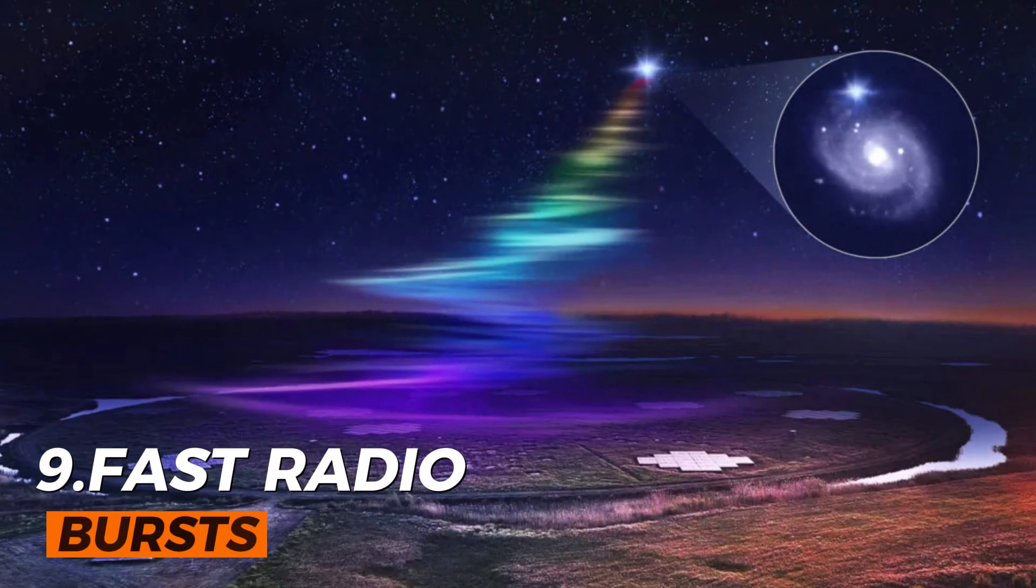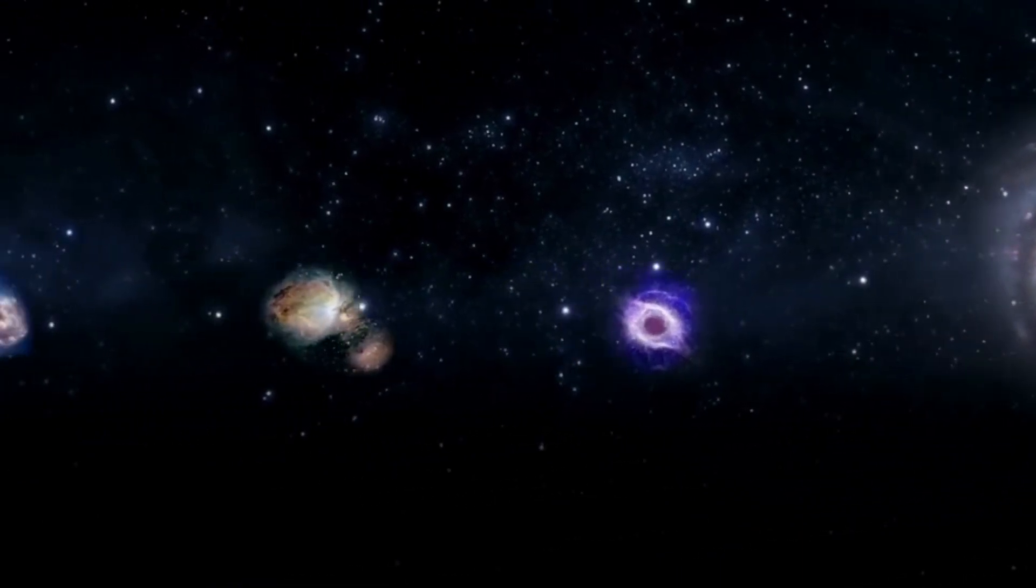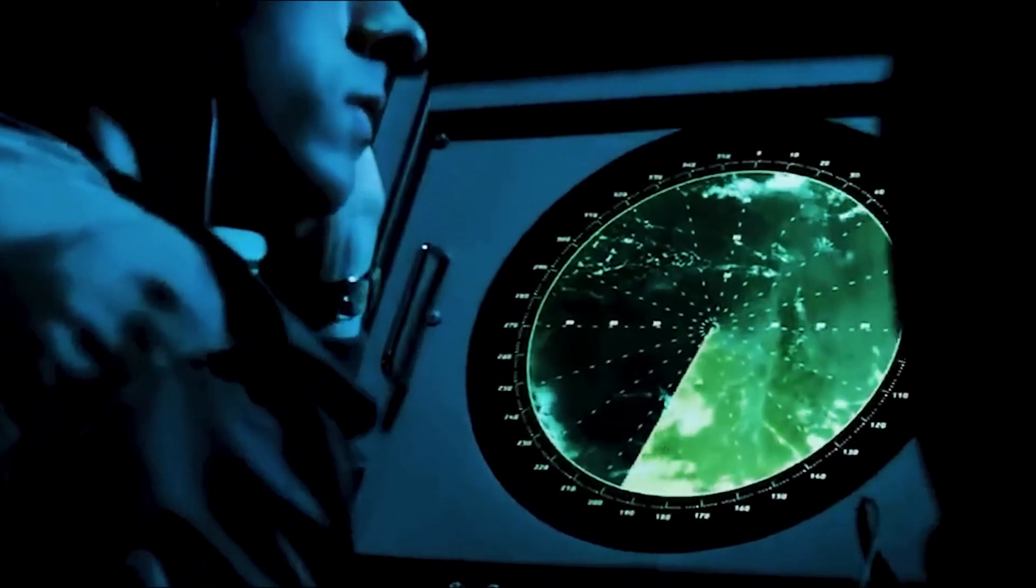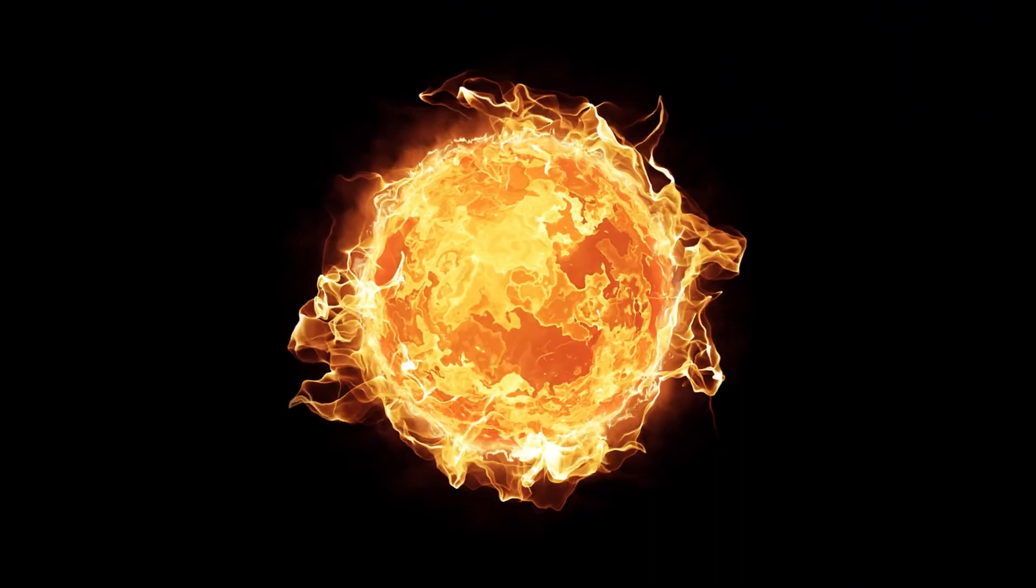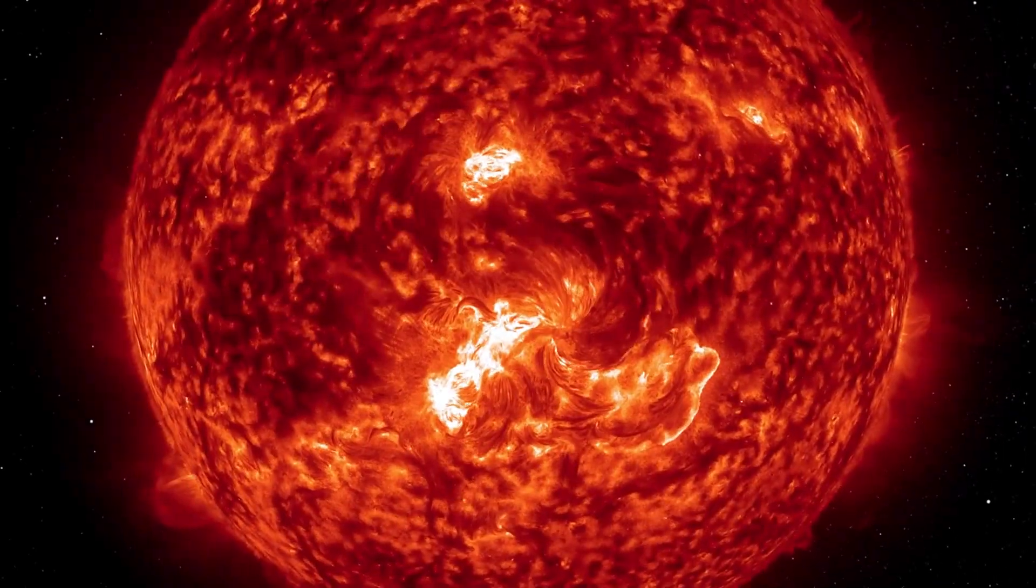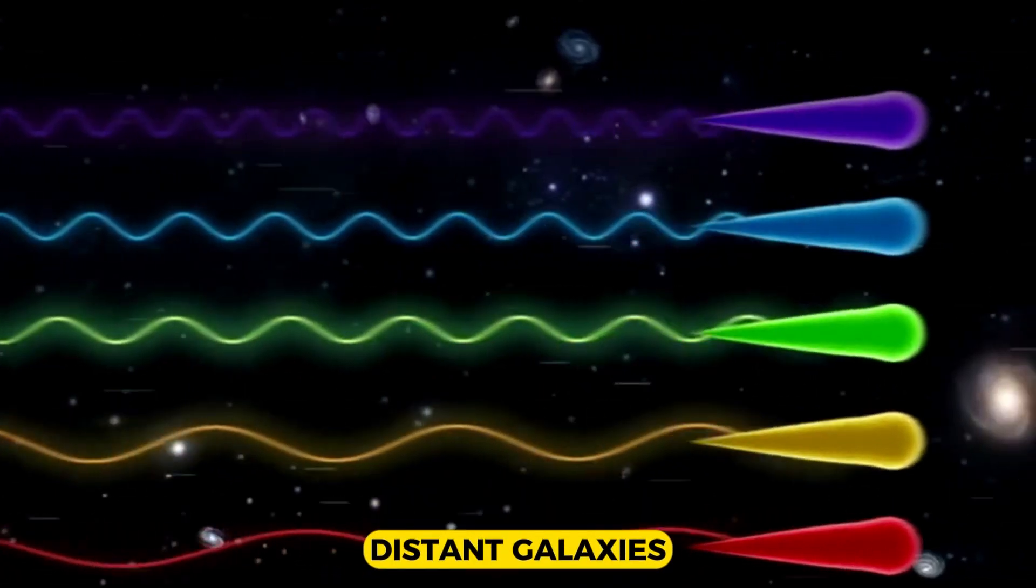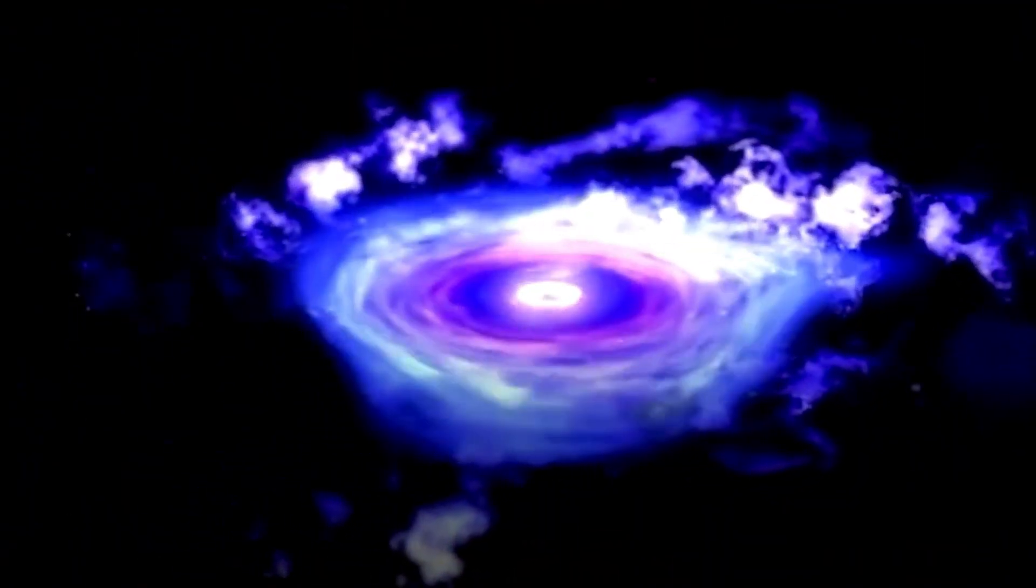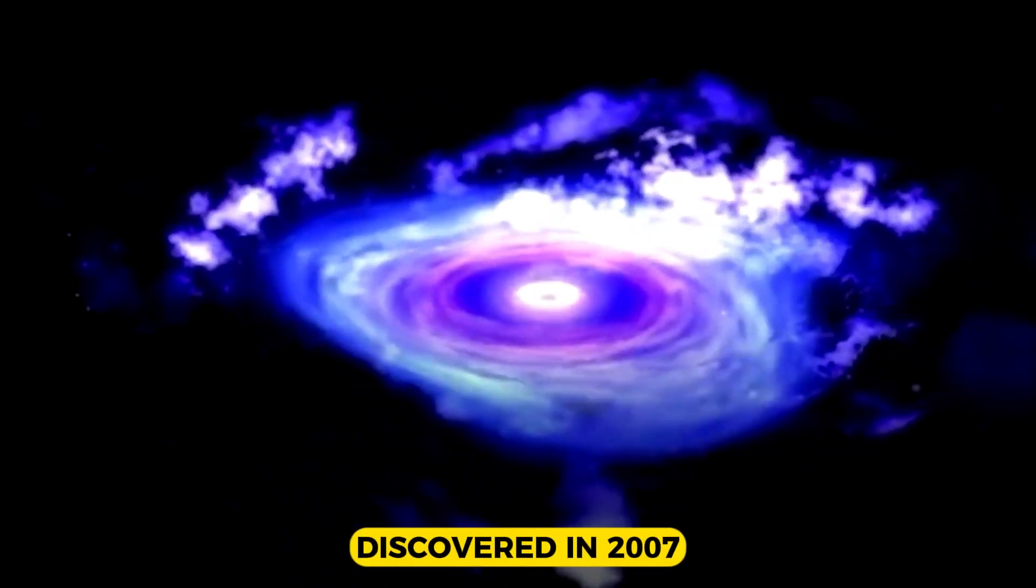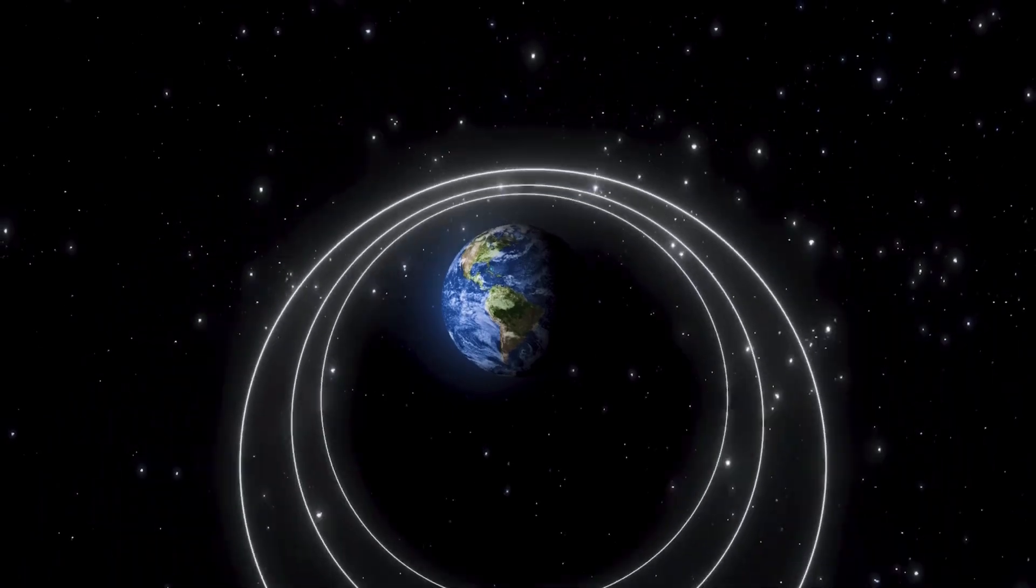Number 9: Fast Radio Bursts. Fast radio bursts are one of the most enigmatic phenomena in outer space that have baffled scientists for years. They are sudden and powerful flashes of radio waves that last only a few milliseconds, but emit more energy than the sun does in a hundred years. They come from unknown sources in distant galaxies, and have been detected only a few dozen times since they were first discovered in 2007. Some of them repeat irregularly, while others seem to be one-off events.